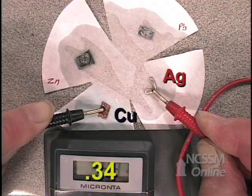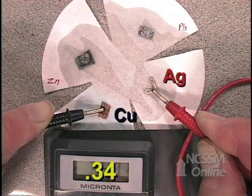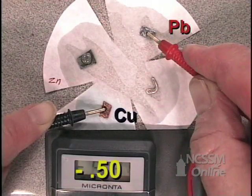So here we have copper and silver. Notice the silver was on the red. Now we have copper and lead and the voltage.